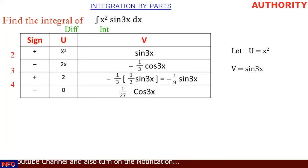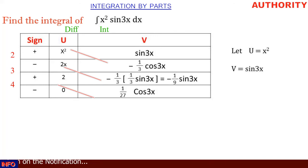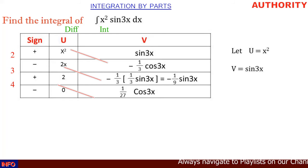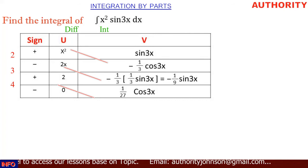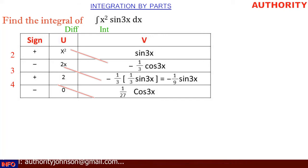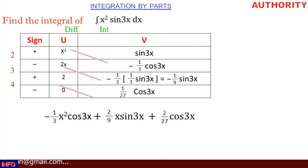Now we read the results using diagonal arrows. Let's call the rows: row 2, row 3, row 4. The arrow goes diagonally from u in one row to v in the next row. Row 2 has a positive sign, so x squared multiplied by minus 1 over 3 cos 3x from row 3 gives us minus 1 over 3 x squared cos 3x.